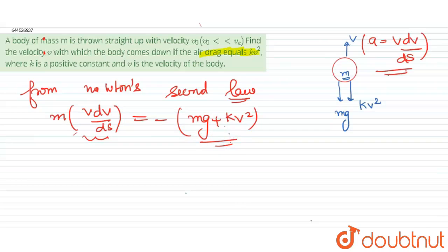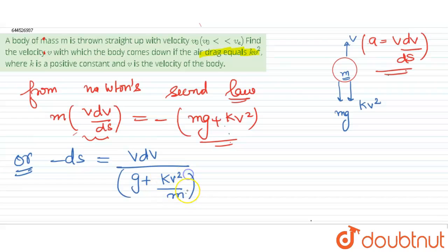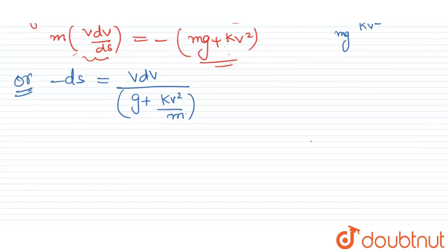This equation can be rewritten as: ds equals minus v dv divided by (g plus kv square over m). We now integrate this to find the maximum height reached by the body.